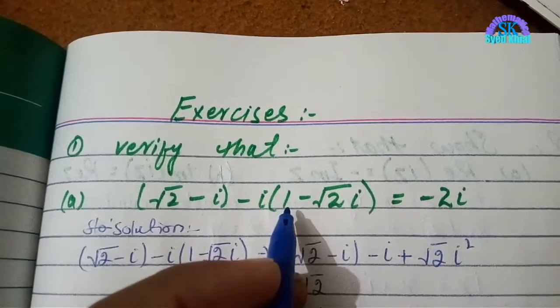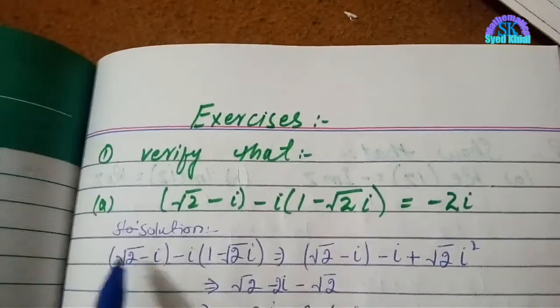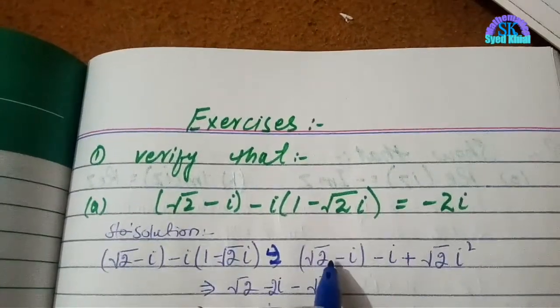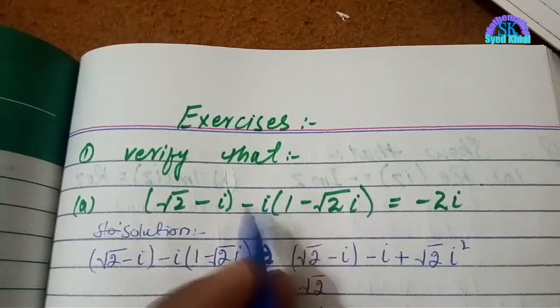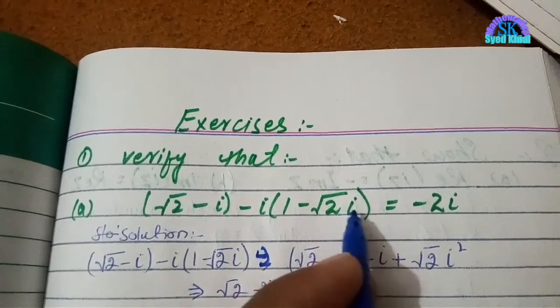We will multiply √2i minus iota, minus 1 iota, minus iota, minus minus plus √2 iota. Iota iota iota square, you know.